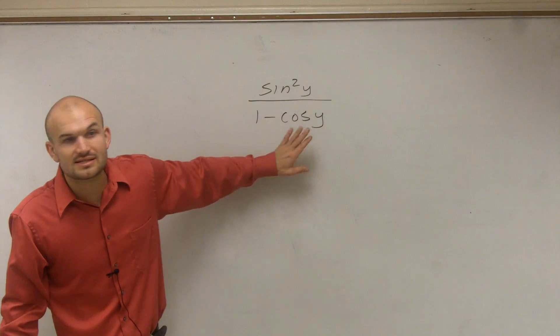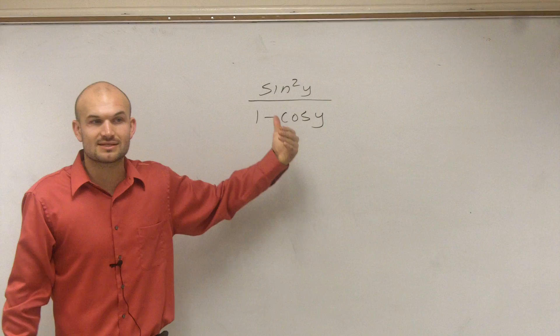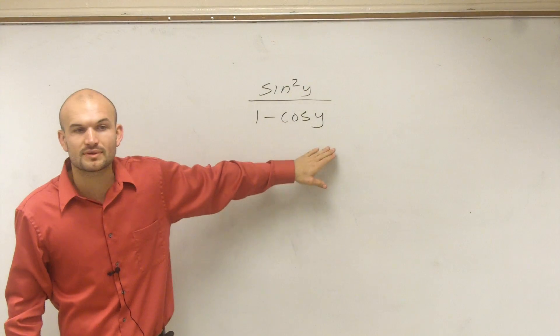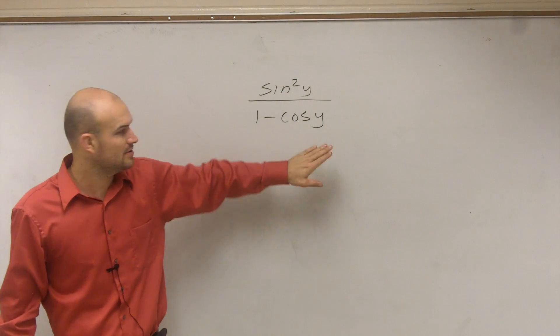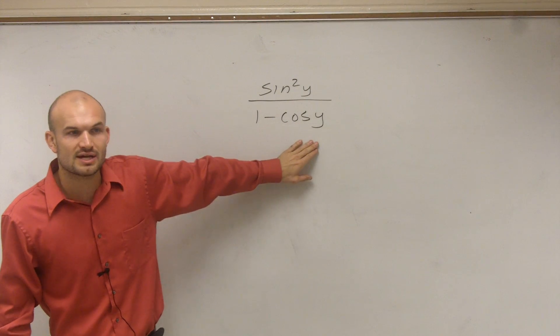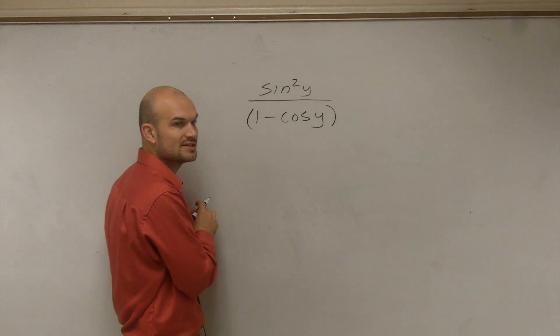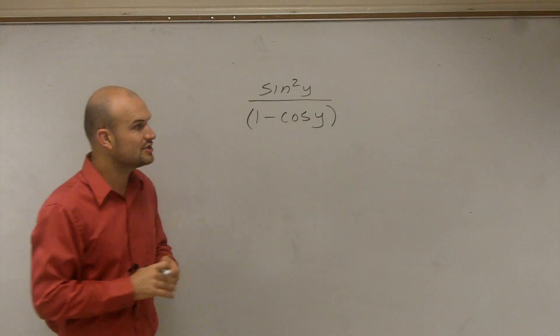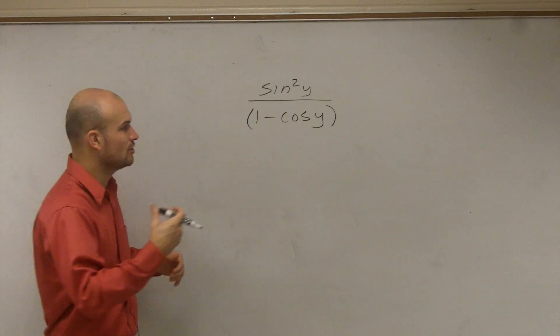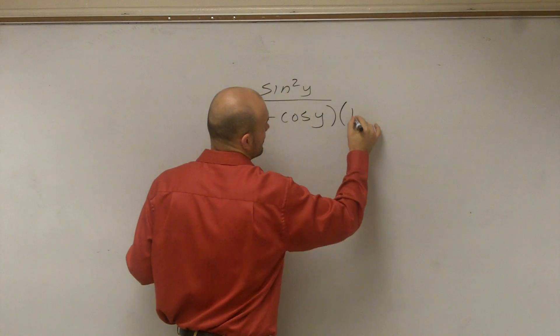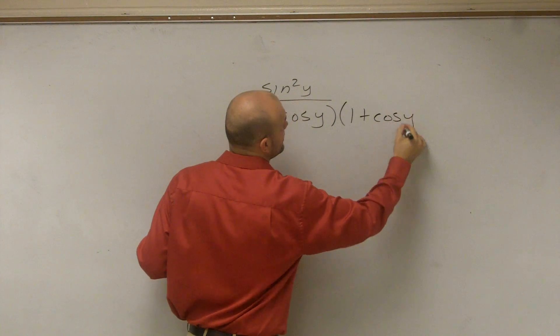So that's the same thing we're going to apply, and we worked on this last class period. If I need to get this cosine off the bottom, I'm going to multiply by the conjugate of 1 minus cosine of y. So the conjugate of 1 minus cosine of y is 1 plus cosine of y, right?